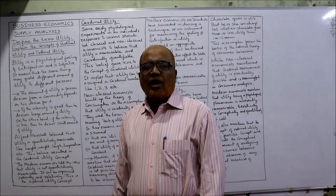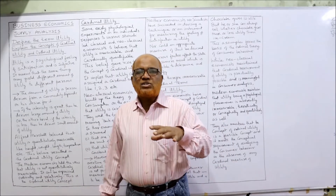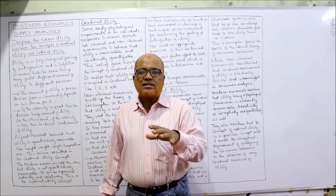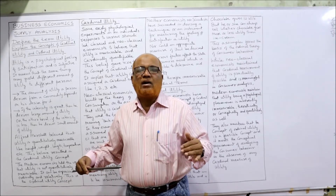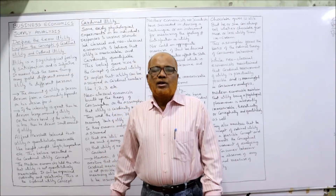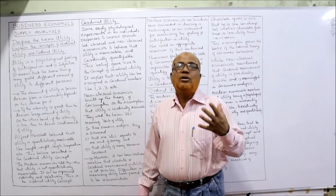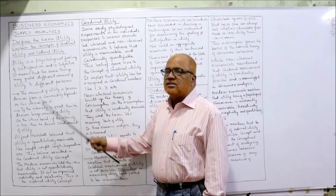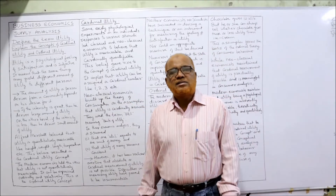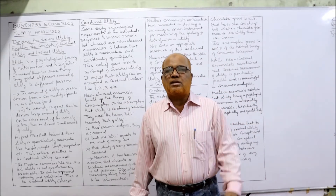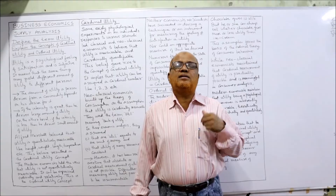In this video I'm going to explain the meaning of the term utility. Utility means the satisfaction which a person gets by consuming goods. Because human wants are unlimited, we have to satisfy our needs by consuming goods. By consuming goods we get some satisfaction, and that satisfaction is called utility. In simple words, utility is a psychological feeling of satisfaction and it is subjective.